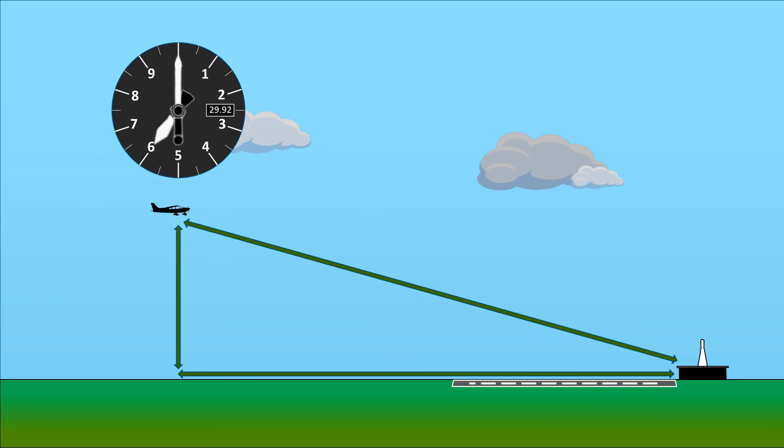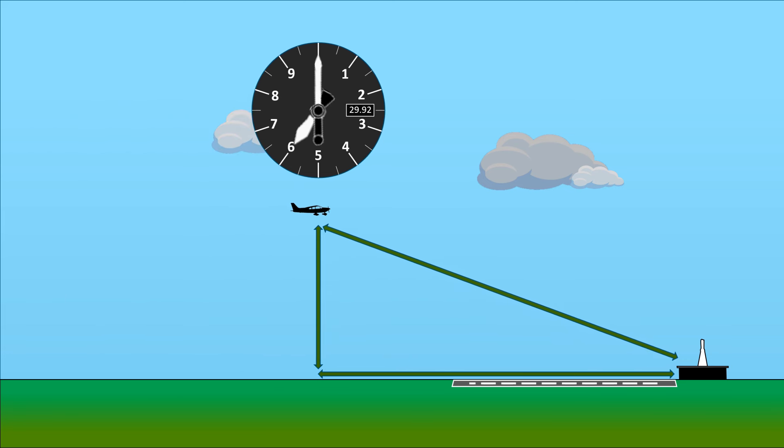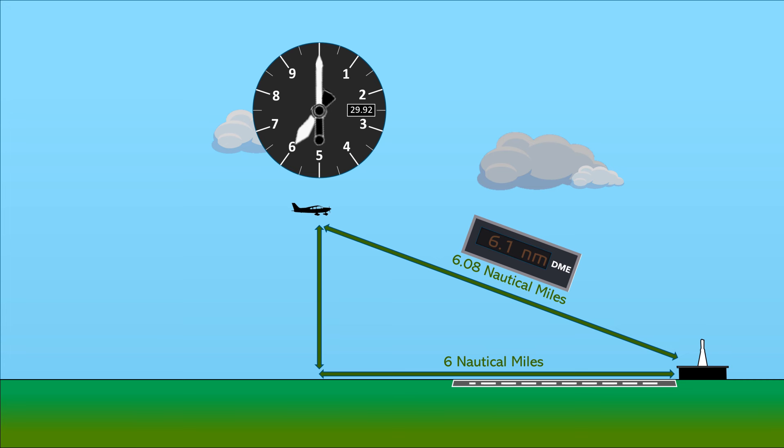Watch what happens though as we fly closer. At the same 6,000 foot altitude, being 6 miles away in ground distance translates to a slant range distance of 6.08 miles. Round it up, this will have the DME show 6.1. There's starting to be a difference between what the DME says and what our ground distance, which is what we're really concerned with, actually is.